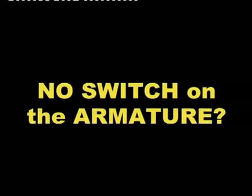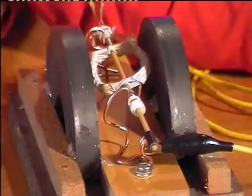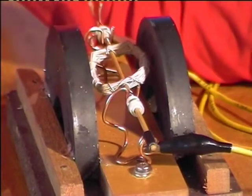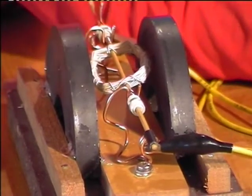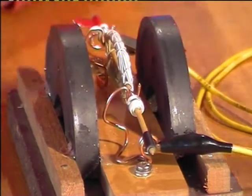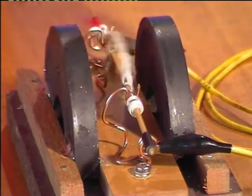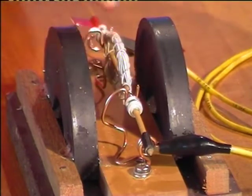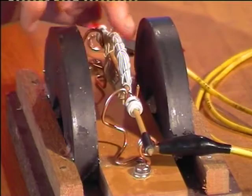What happens if there is no switch on the armature? This armature has no switch. Let's see what happens when we put it in. When I turn on the current, it will just stay in one spot only because it does not have a switch. No matter what I do here, it will just keep on going back to the same old position it was in before.